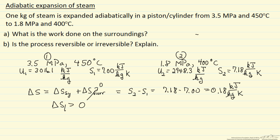The fact that the total delta S is positive means the process is irreversible. It is important to remember both system and surroundings, but because this is adiabatic, there is no entropy change for the surroundings.